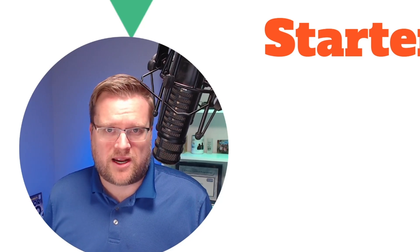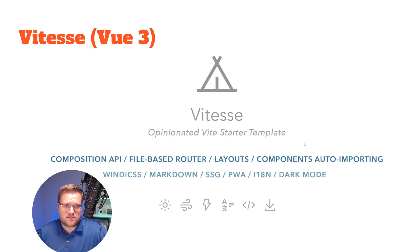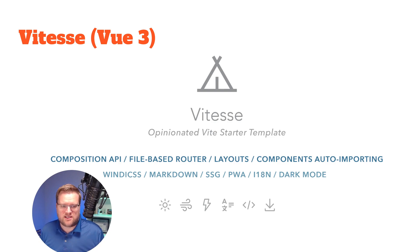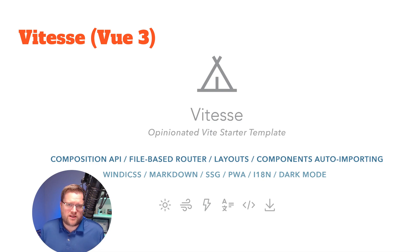Let's look at some starter templates I recommend. The first is Vitesse — it's probably one of the best for Vue 3. It has a whole bunch of plugins including the Composition API, a file-based router plugin, a really cool layout system, auto-importing, Windy CSS, Markdown, Static Site Generation, Progressive Web App support, and internationalization — all in one place. I've used it in a couple of projects and it's really nice. This would be my number one starter template, especially if you're using Vue 3.